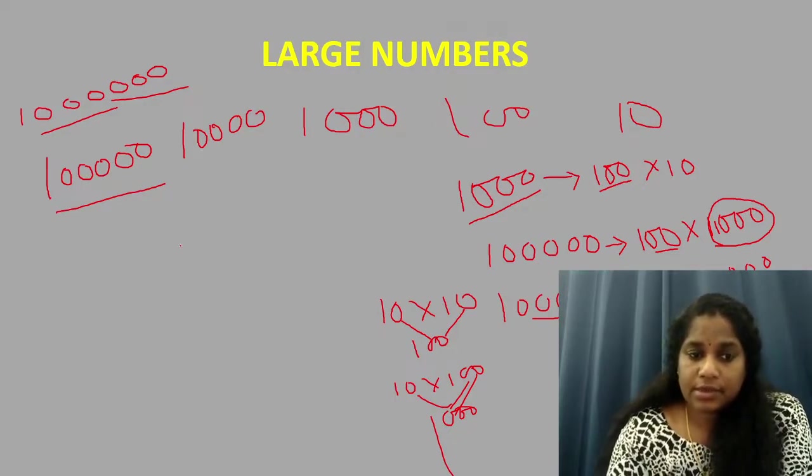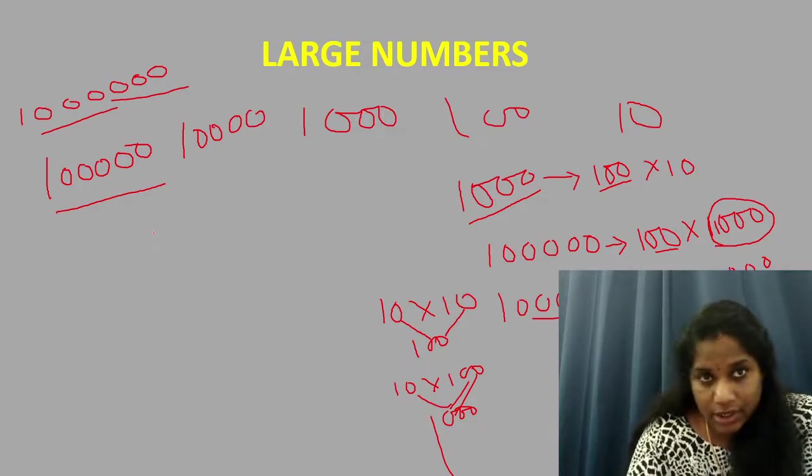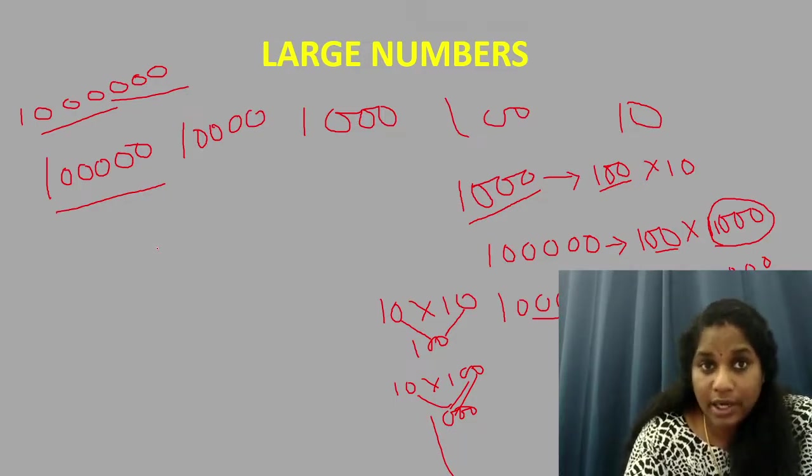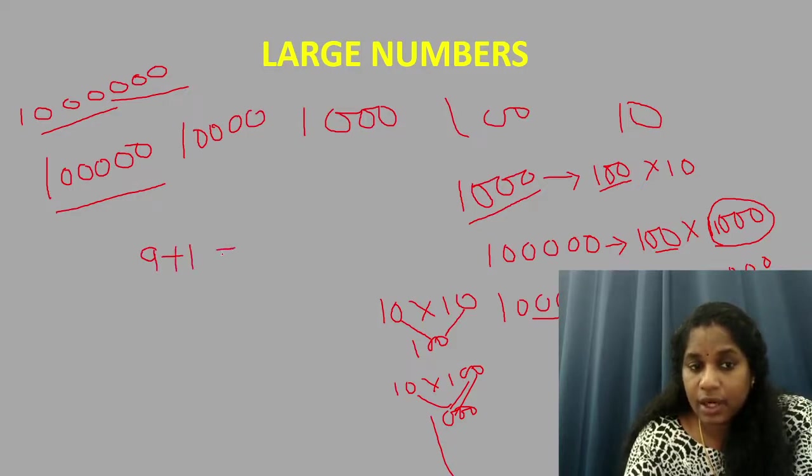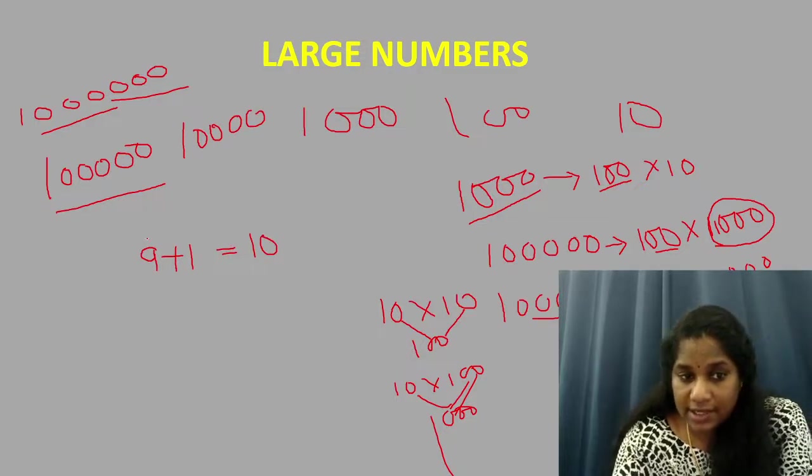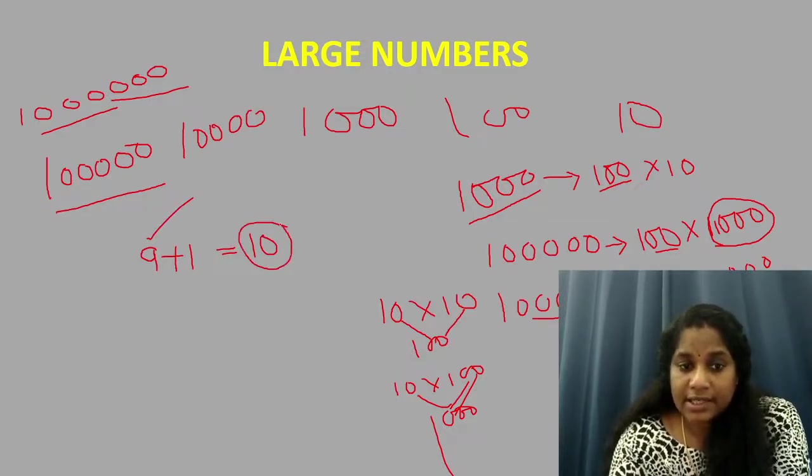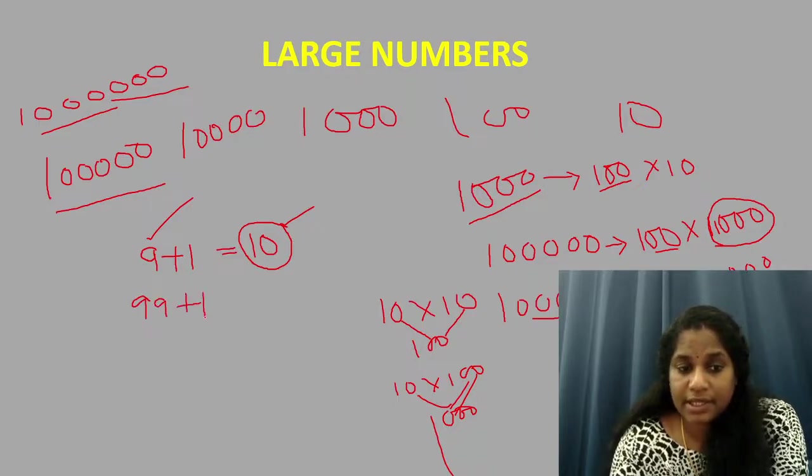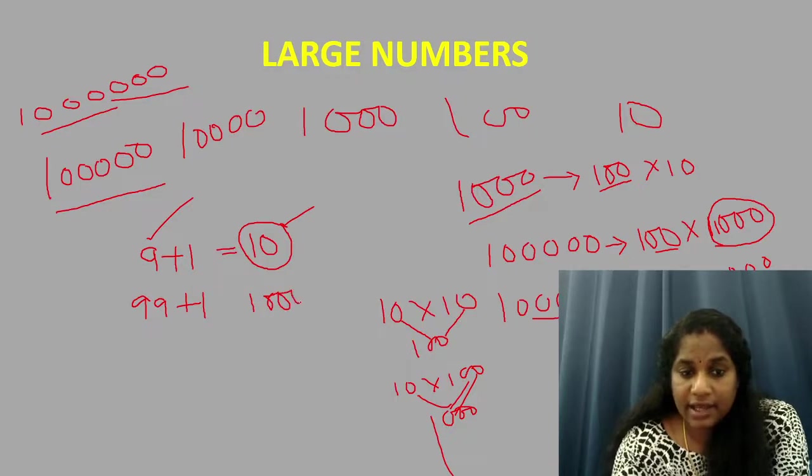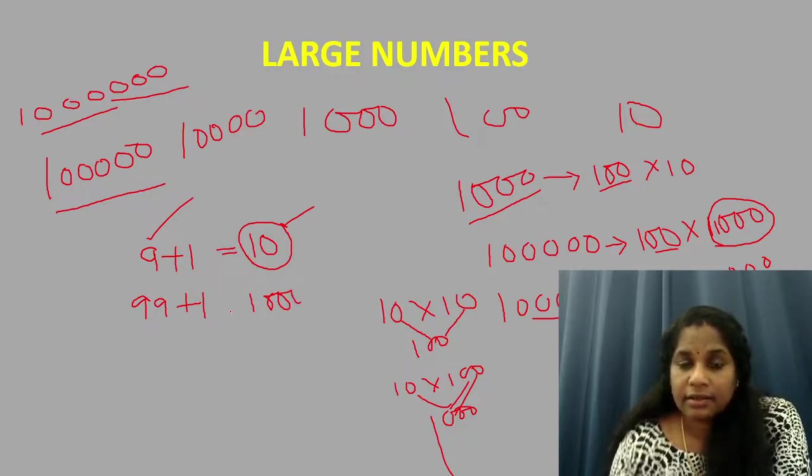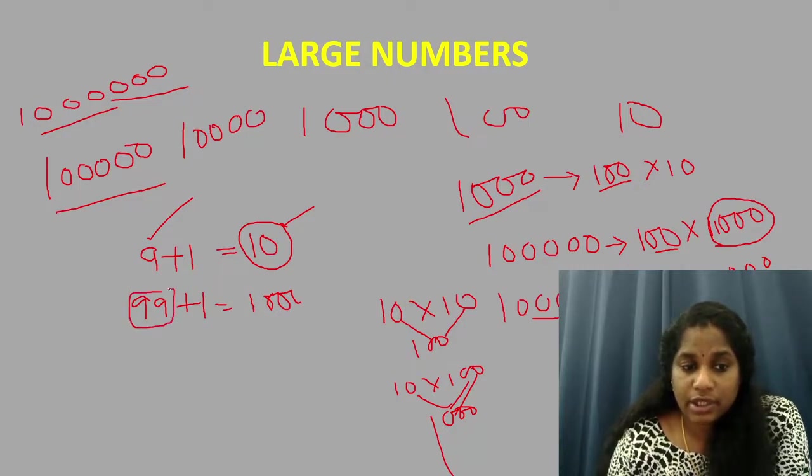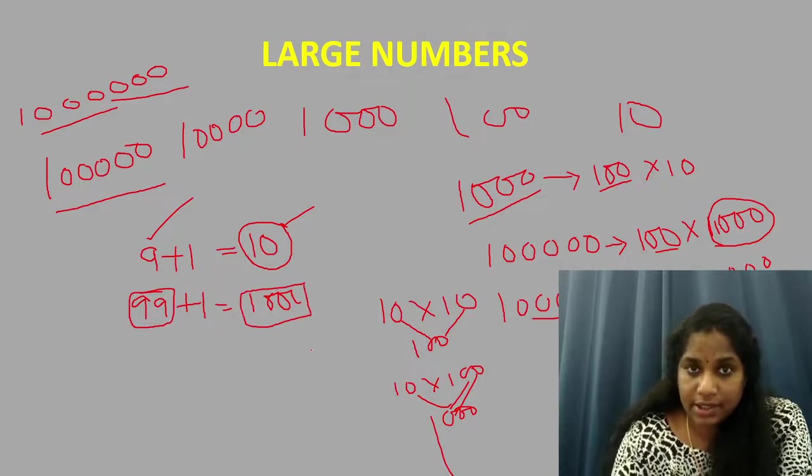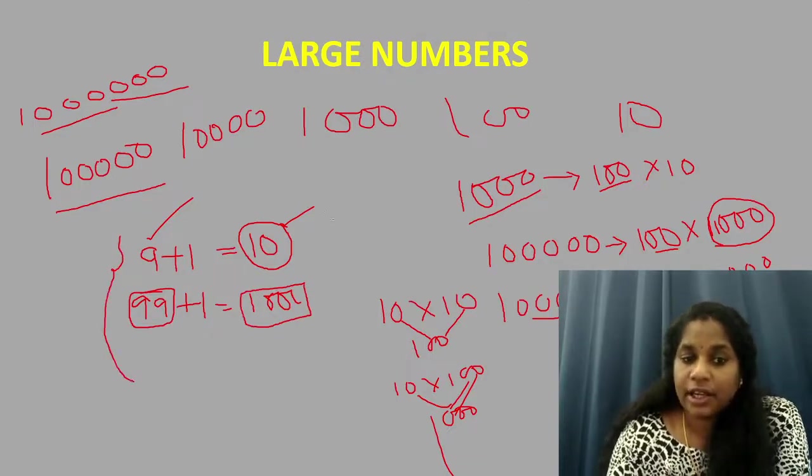Now every time people ask us what is the smallest two digit number? So can you tell me what is the largest one digit number? Isn't it nine? Because after nine if I add one plus nine what happens? I get ten. So nine is the largest one digit number. And ten is the smallest two digit number. And if I say ninety nine plus one what happens? I will get hundred. Like that our numbers get increasing. Ninety nine plus one is hundred. This is the largest two digit number. And this is the smallest three digit number. So this is a pattern that might be useful for you.